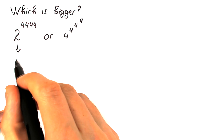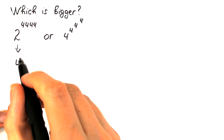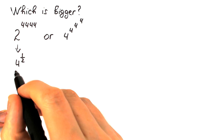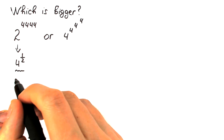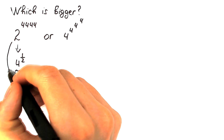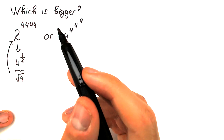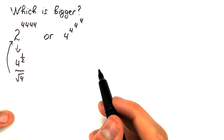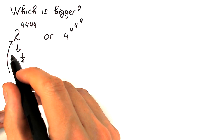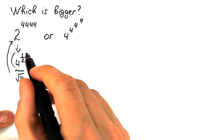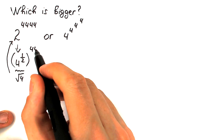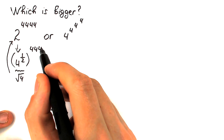We write 4 to the power one-half, since the square root of 4 equals 2. So 2 is the same as 4^(1/2). Therefore, 2^4444 becomes 4^(1/2) raised to the power 4444.